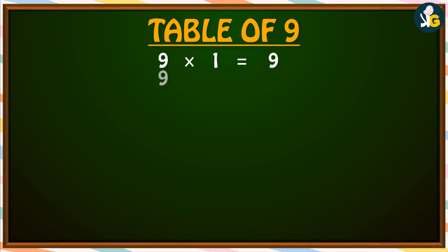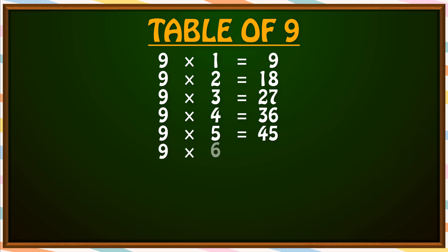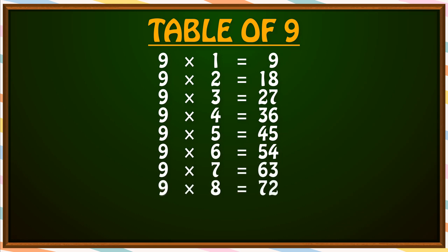9 times 1 is 9. 9 times 2 is 18. 9 times 3 is 27. 9 times 4 is 36. 9 times 5 is 45. 9 times 6 is 54. 9 times 7 is 63. 9 times 8 is 72. 9 times 9 is 81. 9 times 10 is 90.